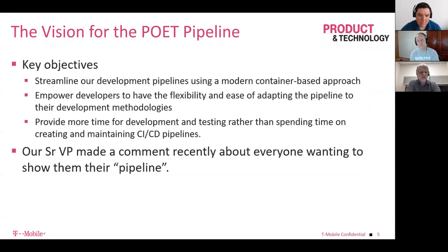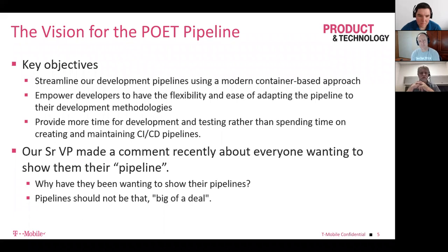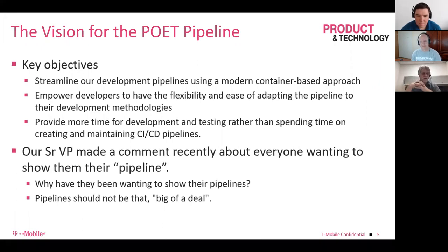POET stands for Pipelines, Operations, Environments, and Technology — or Tooling. We're a shared service organization that works around SRE-type functions and system reliability engineering, to help streamline application development and practices for teams. Our primary focus is on frontline teams — think retail stores and customer care — but we also help other teams as requested.